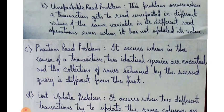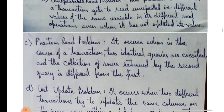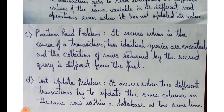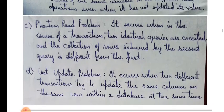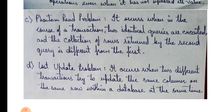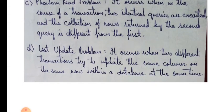The third is phantom read problem. It occurs when in the course of transaction, two identical queries are executed and the collection of rows returned by the second query is different from the first. The fourth is lost update problem. It occurs when two different transactions try to update the same column on the same row within a database at the same time.